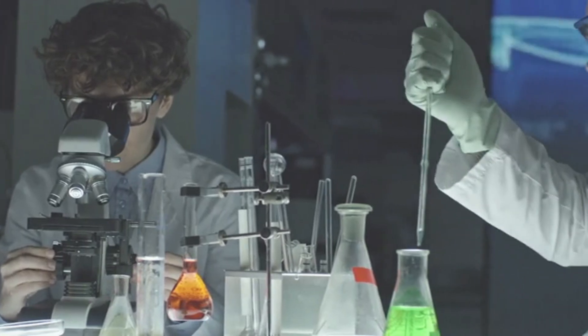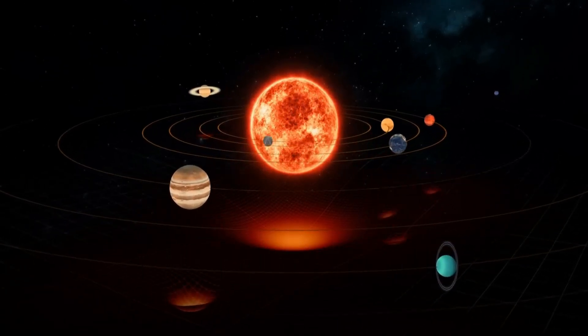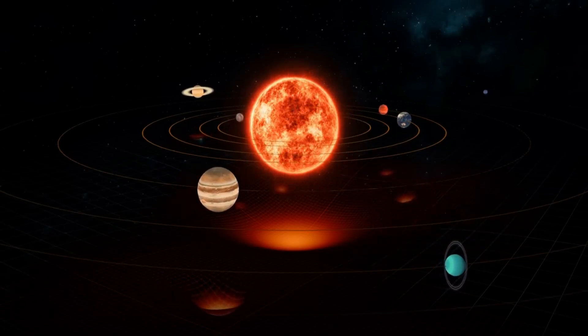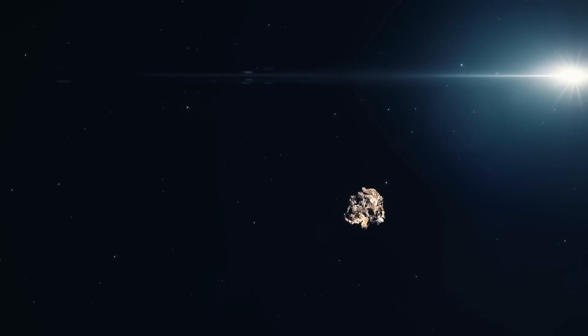Asteroids typically orbit the sun within our solar system. Yet, Oumuamua followed its unique path, not conforming to the usual asteroid orbit. Now let's delve into its peculiar behavior.